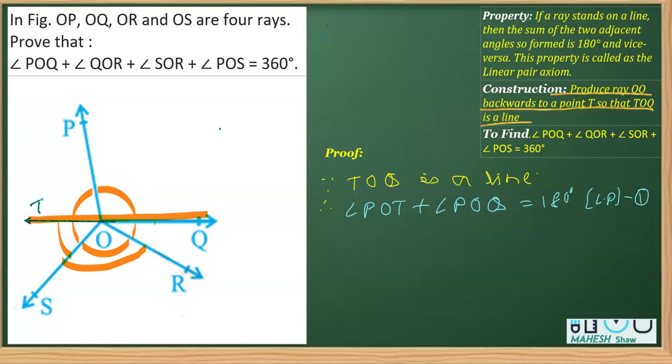Now, since it is a line, therefore the sum of these three angles below will also be 180 degrees from the same property. We can continue to write: angle TOS plus angle SOR plus angle ROQ is equal to 180 degrees. The reason remains the same, and this is the second equation.